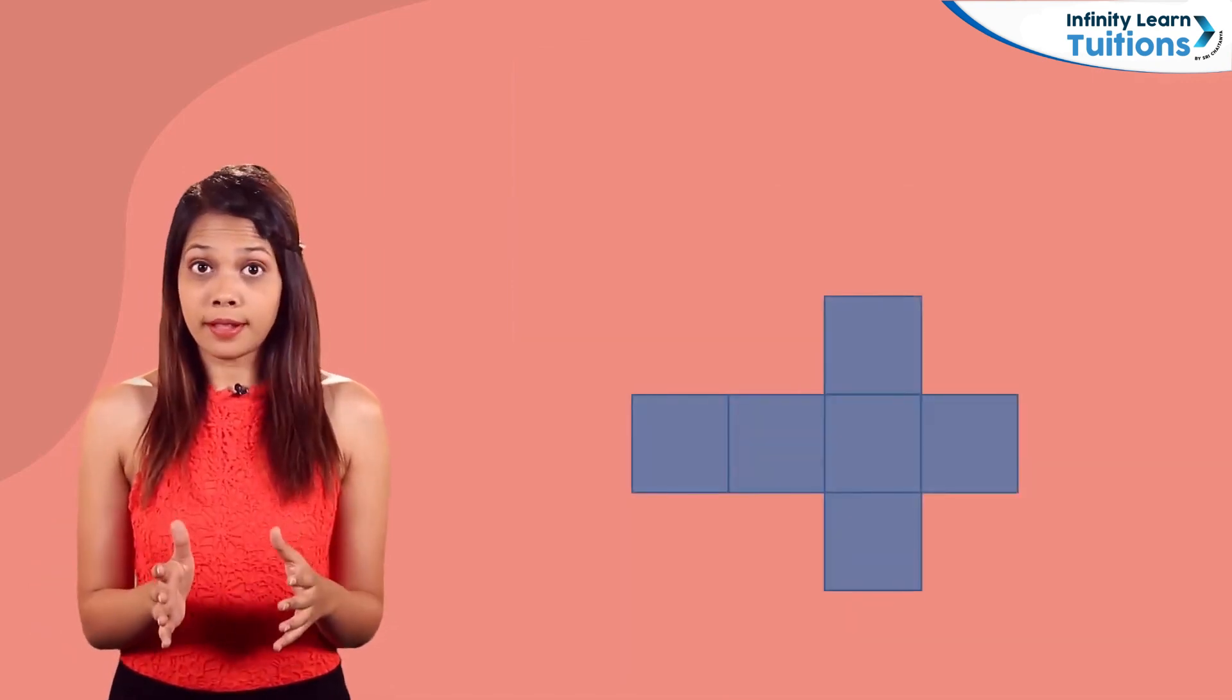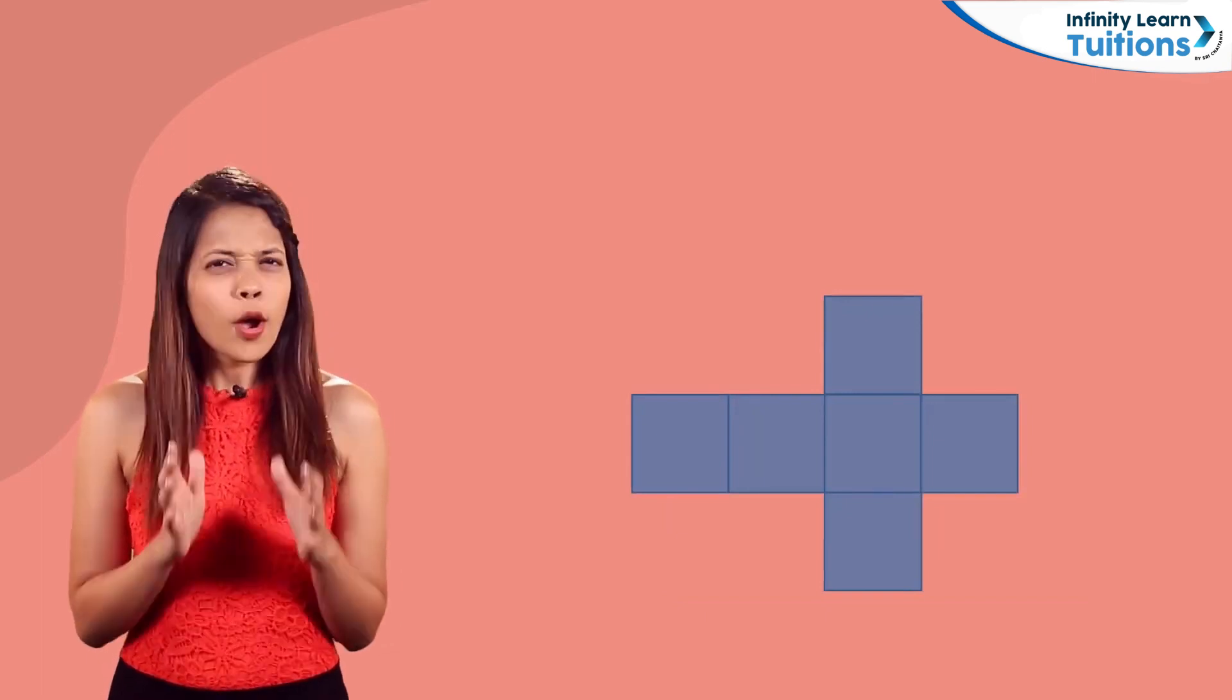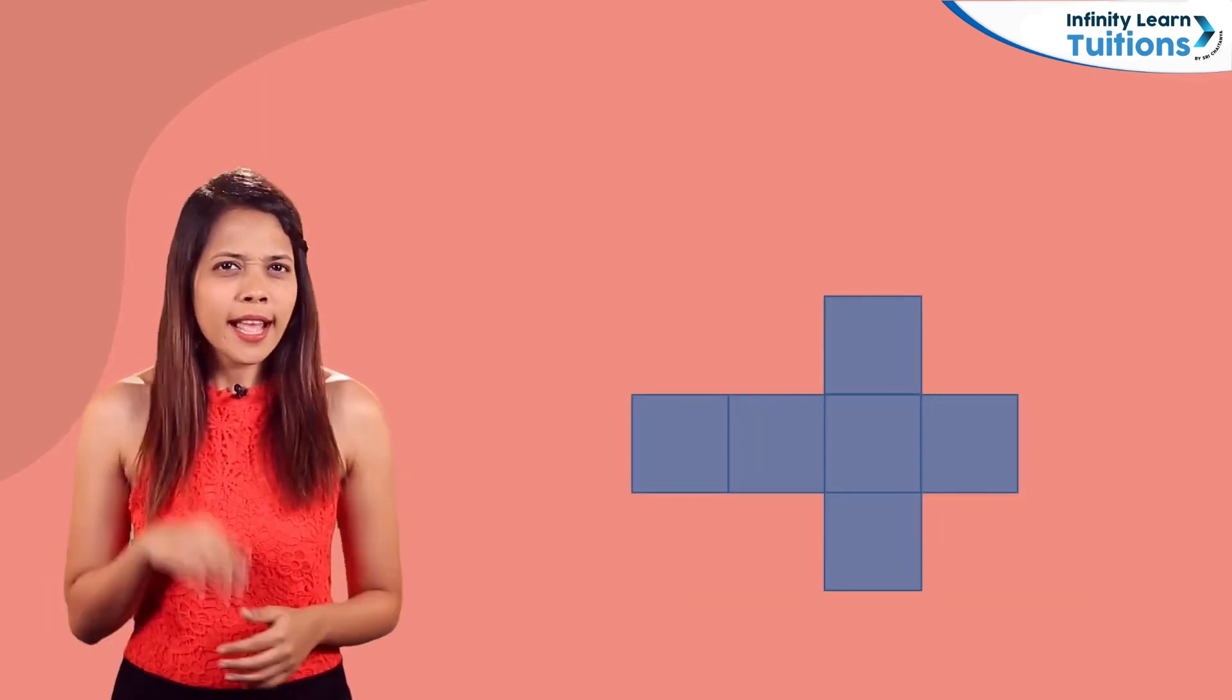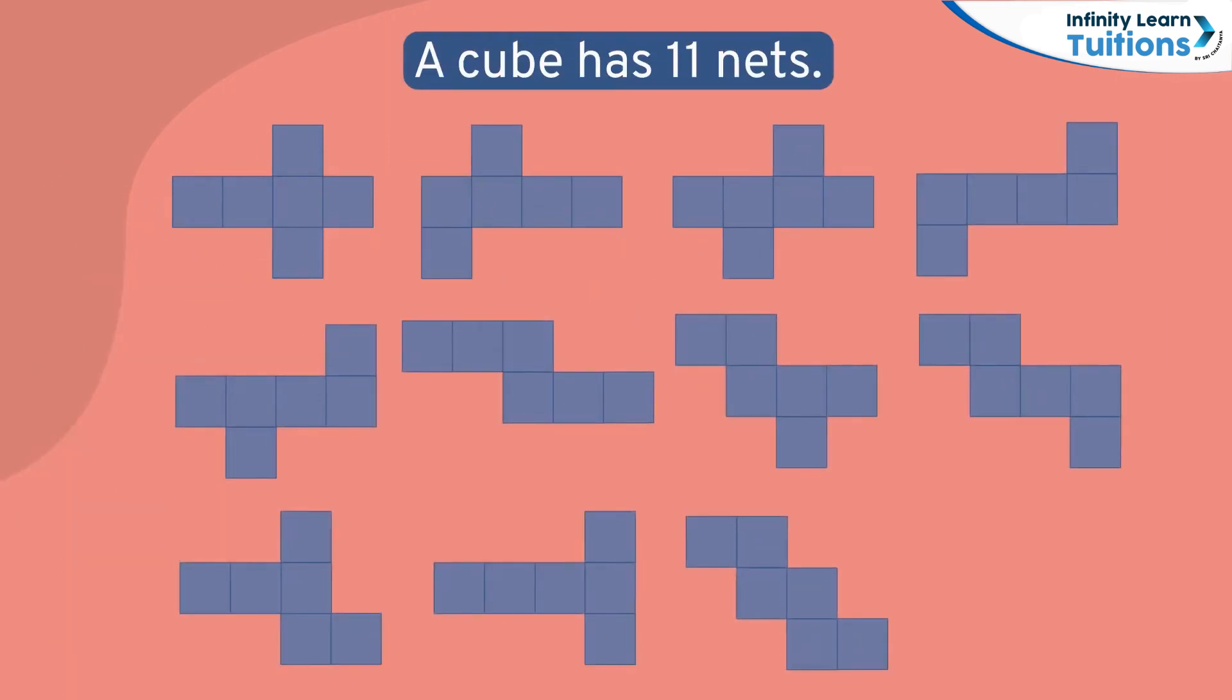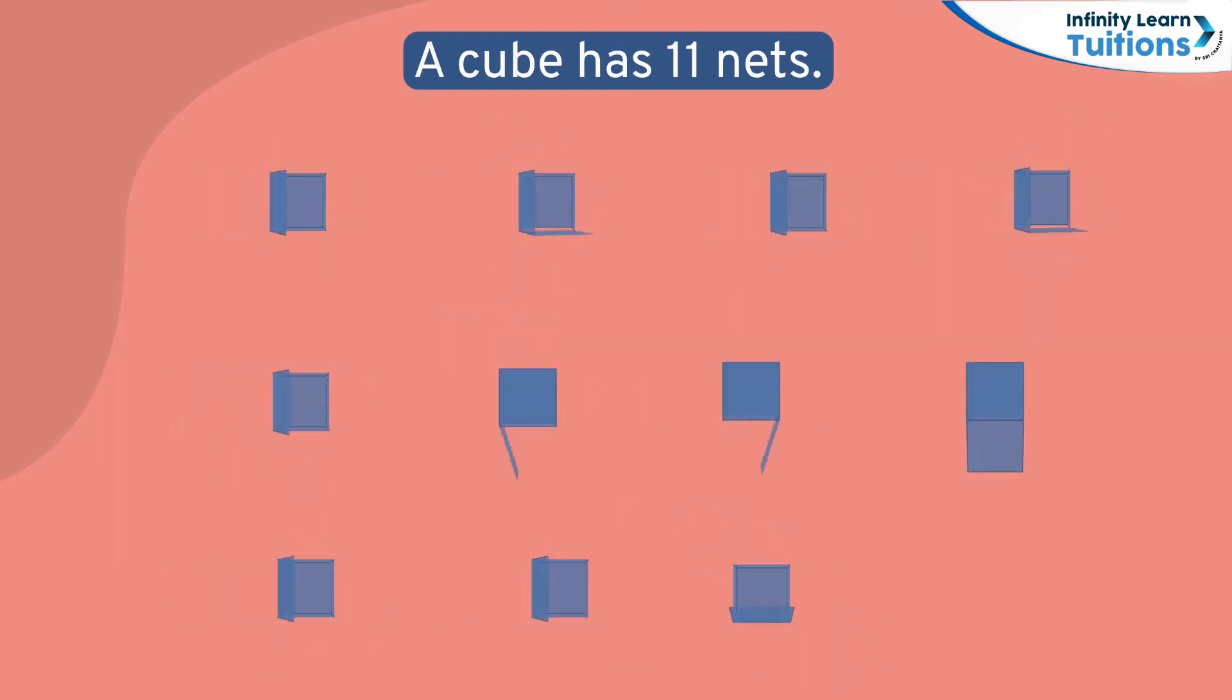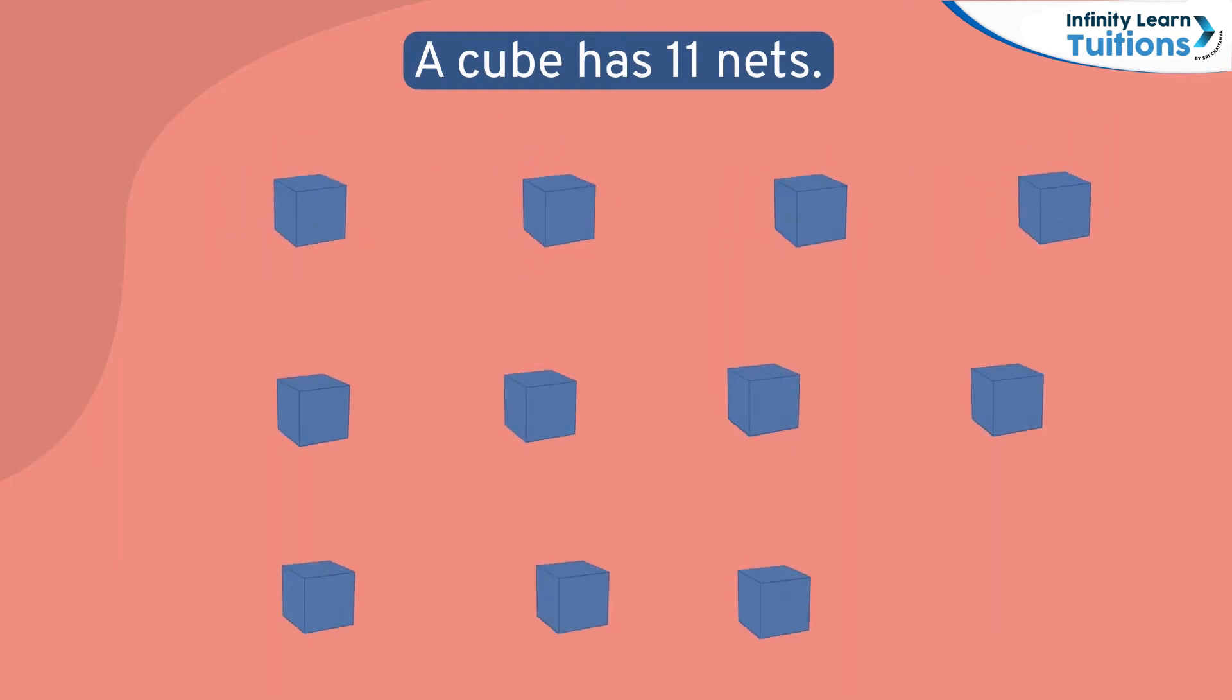Here's another example of a net for a cube. Observe the pattern. Did you know that a cube has 11 such nets? Look at these 11 variants and see how they fold to form a cube. Isn't it amazing?